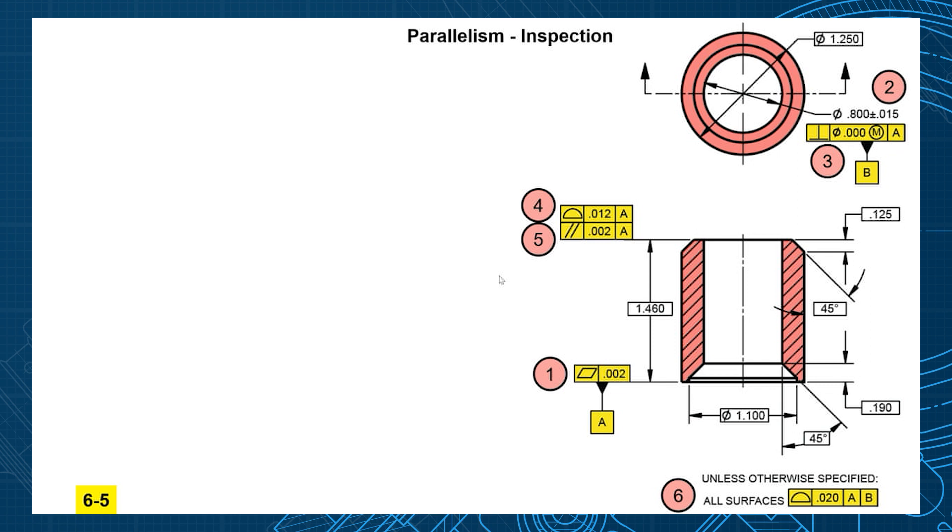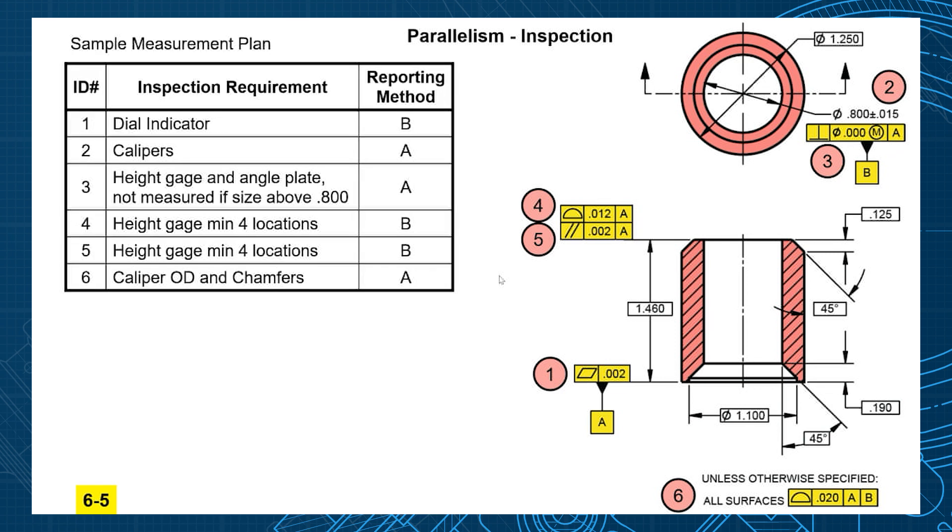So let's talk a little bit about the inspection on that profile and parallelism. I put inspection bubbles on here just like we talked about in unit 5. So bubbles represent IDs that we'll need to measure. Then we'll create a quality plan. How are you going to measure all of these different specifications? So our measurement plan would say, let's do a dial indicator for some, calipers, height gauge. So let's focus on 4 and 5.